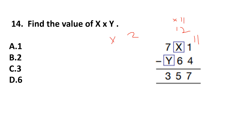And for Y: 7 minus Y — we borrow 1 from here to make X into 12, so the 7 becomes 6. Then 6 minus Y is 3, so 6 minus 3 is 3, meaning Y is 3. We have to find X multiplied by Y: 2 multiplied by 3 is 6. Our answer is option D, which is 6.